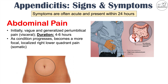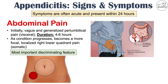As the condition progresses and the appendicitis becomes worse, the pain becomes more focal and localizes to the right lower quadrant. This pain is then referred to as somatic pain. As the appendix becomes more inflamed and enlarged, it starts to push up against things inside the abdomen, so the pain becomes more focal and localized. This pattern — generalized periumbilical pain for several hours migrating to a more focal, localized pain in the right lower quadrant — is the most important discriminating feature of appendicitis.